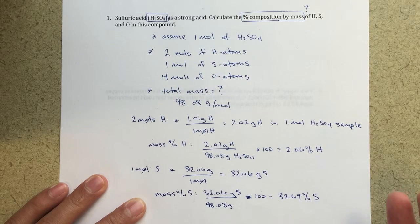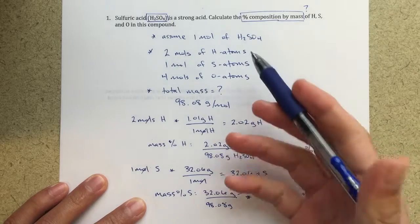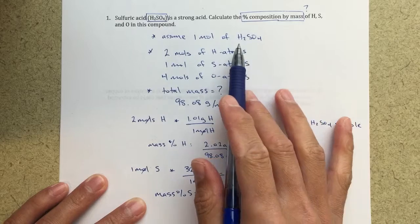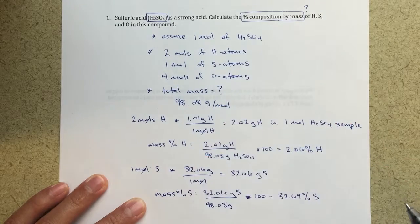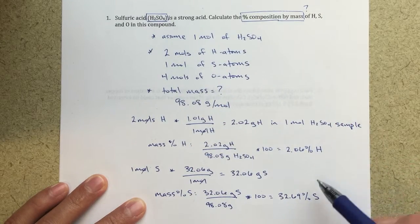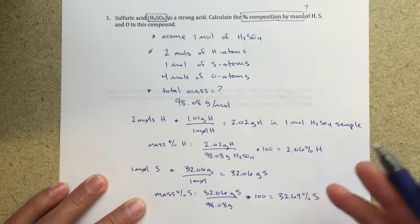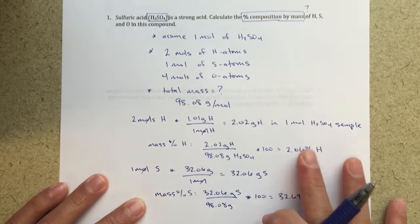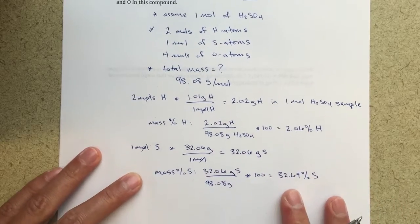Now for oxygen, we know that oxygen basically is making up the rest of the mass. So the total 100% mass is hydrogen plus sulfur plus oxygen. So what we could do is we could take 100 and subtract these two values. That will get us to the correct percentage of oxygen that will be left over. Or we could do the same type of calculation for oxygen.